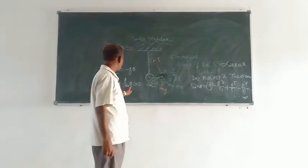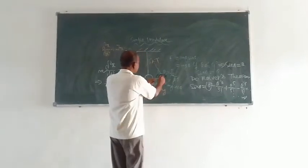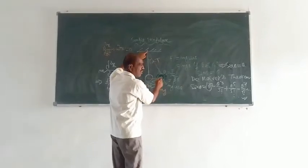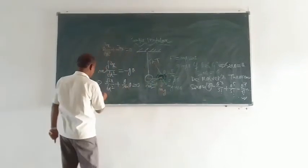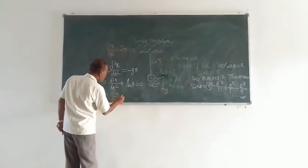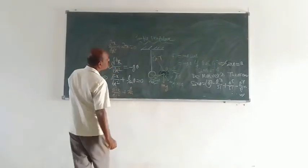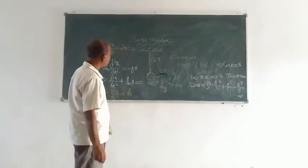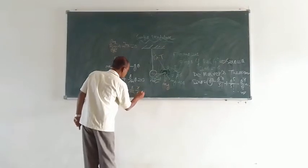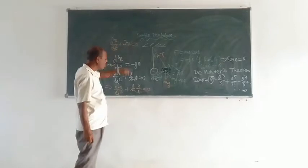Now theta is expressed in terms of x. The length of the arc is x, so theta equals x divided by l, where l is the length of the thread. Substituting this, the equation becomes d²x/dt² plus (g/l) times (x/l) equals zero, which simplifies to d²x/dt² plus (g/l) times x equals zero.